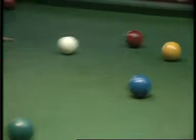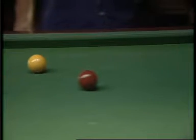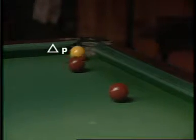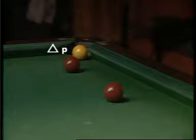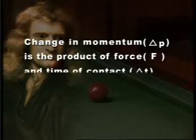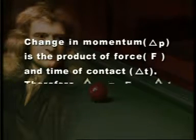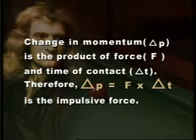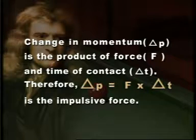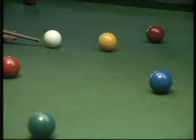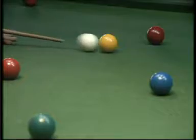This transfer of force creates a change in the momentum of the target ball, which can be measured as delta P. As per Newton's second law of motion, the change in momentum delta P is the product of force F and time of contact delta T. Therefore, the change in momentum, delta P equals F into delta T, is the impulsive force. If the contact time is increased, the effect of impact will decrease considerably.